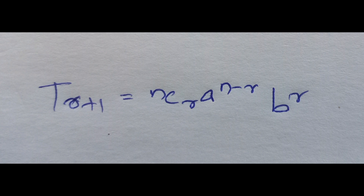General and Middle Terms of the Expansion of A plus B the whole to the power N. We have general terms and middle terms. We need to find the 10th term, 5th term, 7th term using the general term formula.